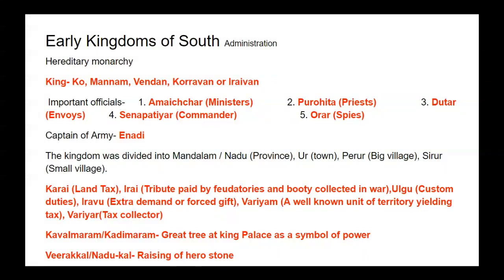Kavalmaram or Kadimaram was the practice of planting a big tree at the king's place, and that tree was a symbol of the power of the king. Virakkal or Nardukkal was the raising of a Hero Stone on the grave of brave dead soldiers.